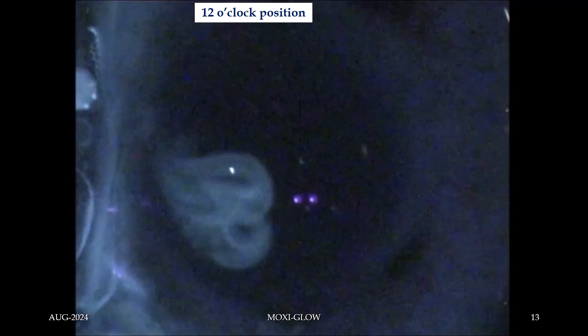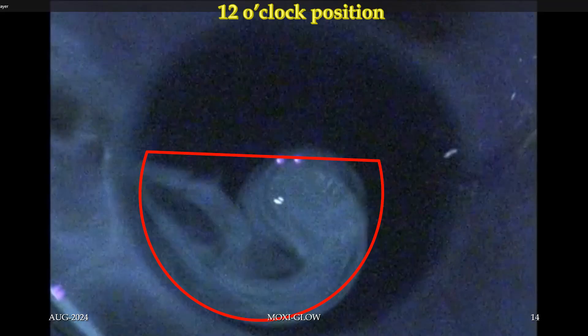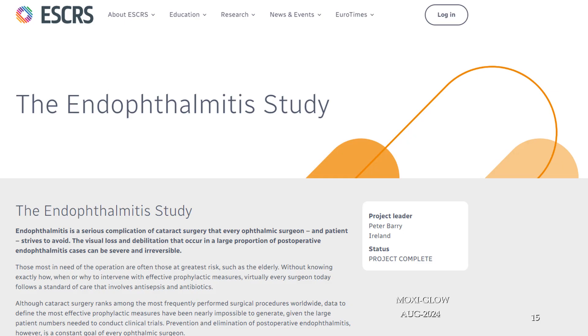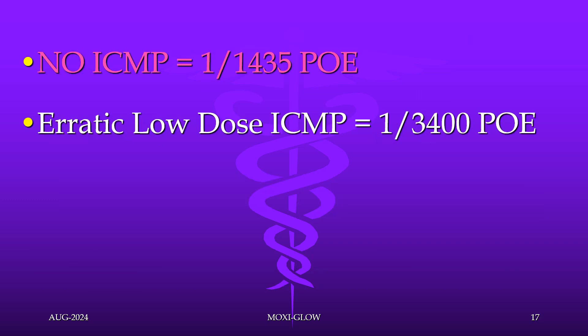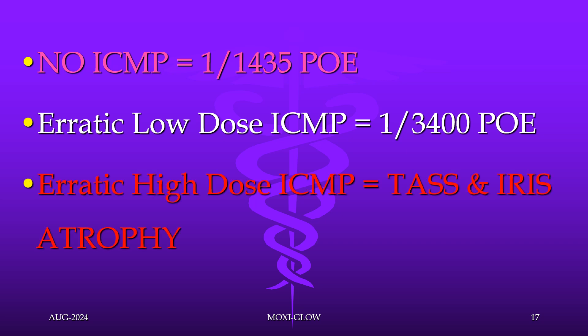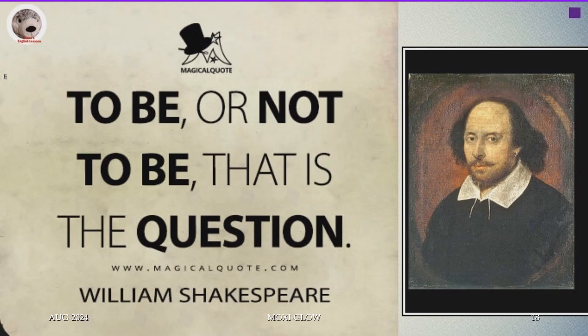So protection provided and the results will be variable. For a few hours, the concentration here can be as high as 5000 micrograms per ml, which may cause endothelitis or iris atrophy. According to the ESCRS endophthalmitis study and Irwin group study, if you don't use intracameral moxifloxacin there is a 1 in 1400 chance of endophthalmitis; if you do use it, the chance is 1 in 5800 — a four-fold risk reduction. Erratic or low-dose moxifloxacin gives a 1 in 3400 chance, and erratic high-dose moxifloxacin brings TAS and iris atrophy risk.